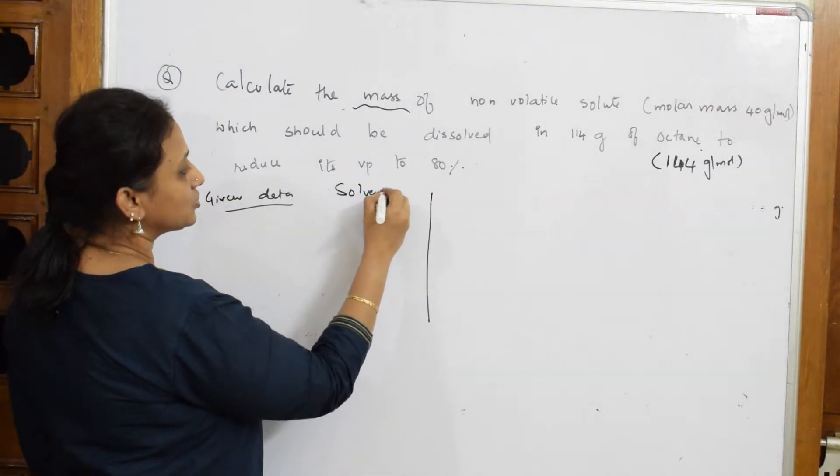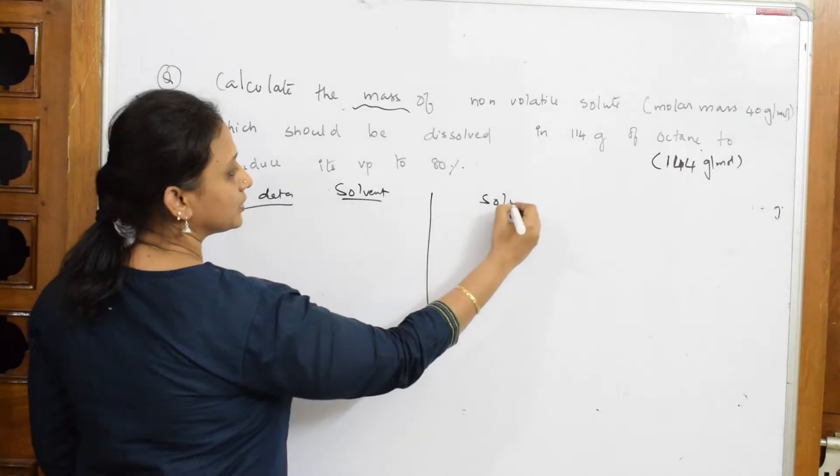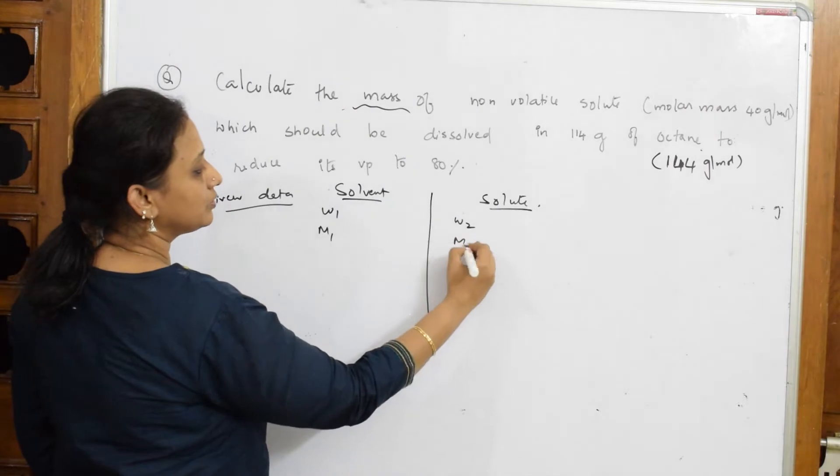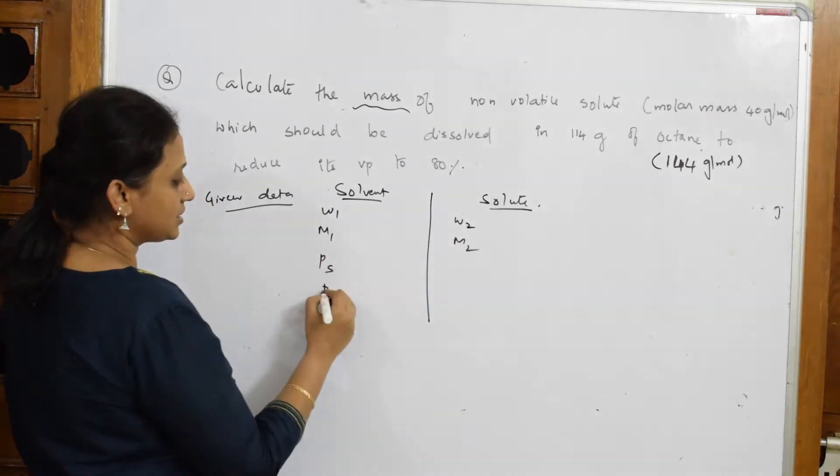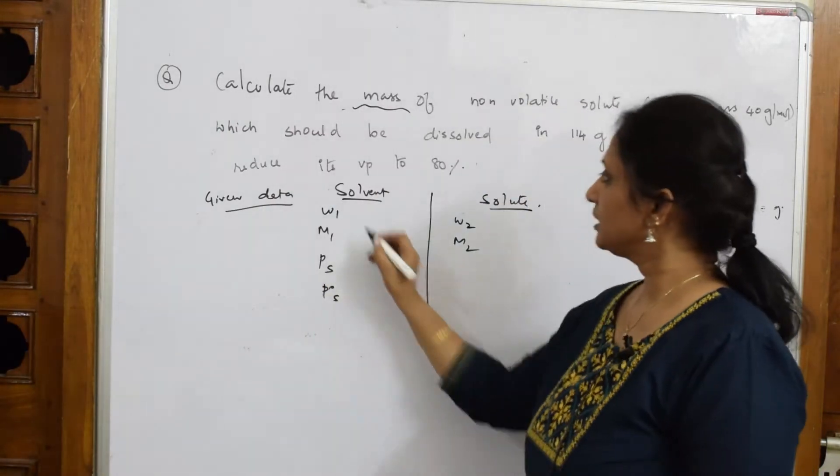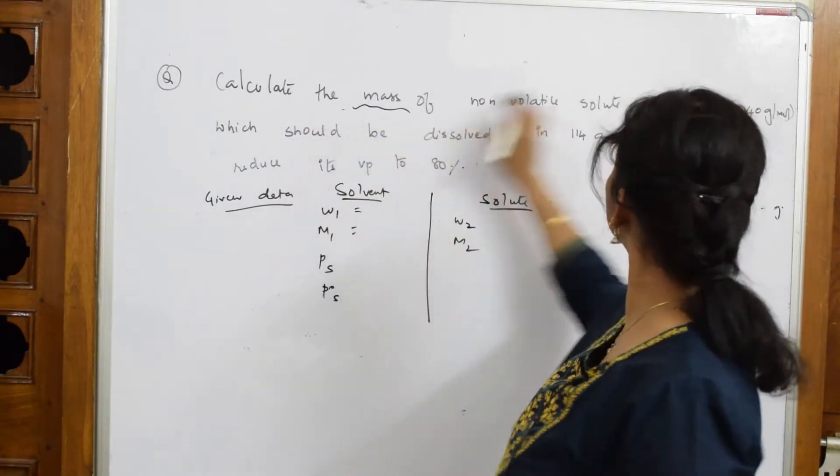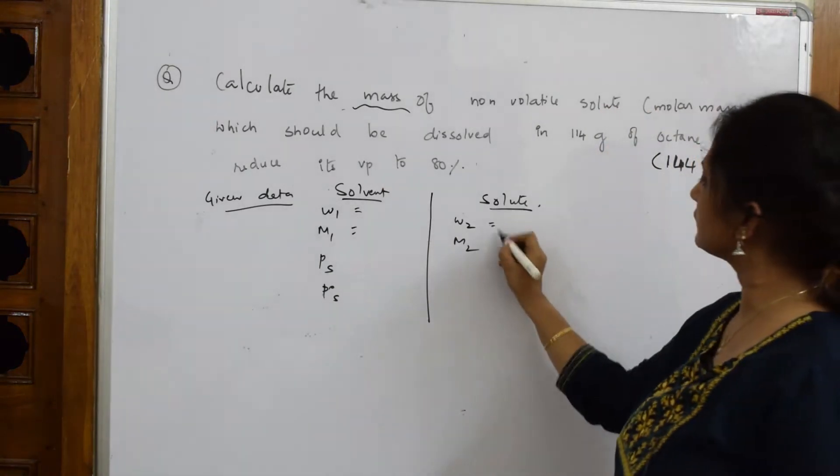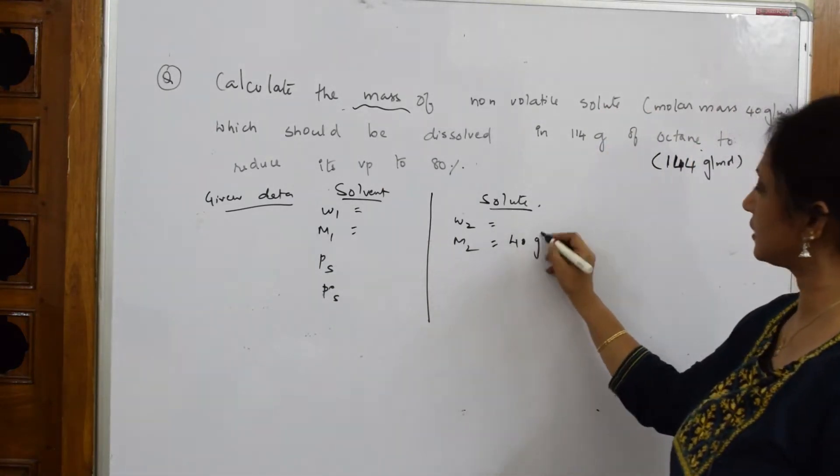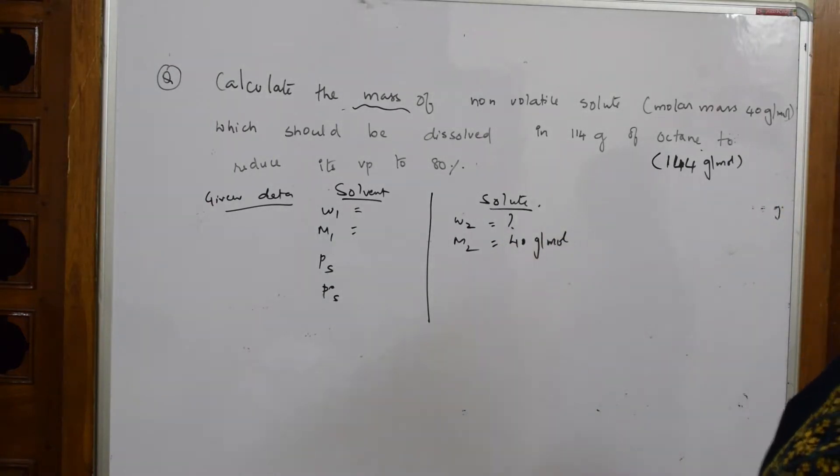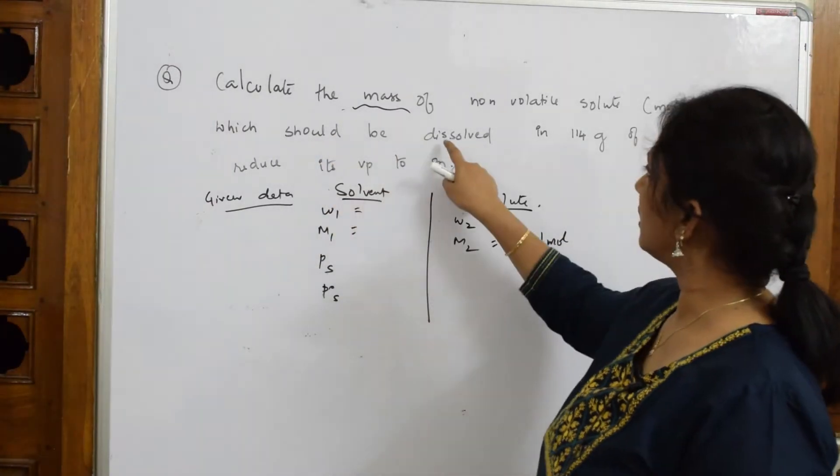The solute's molar mass is given as 40 grams per mole. I need to find the weight that should be dissolved - that's what we have to calculate.